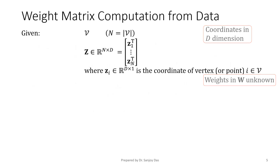This is how the matrix z looks like. Each row of z is a zi transposed, where zi is the coordinate of the vertex i in v.